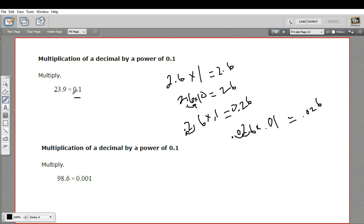So let's see how this works in a couple of these problems. This first one says multiply 23.9 times 0.1. The 0.1, that's just one place in the decimal, means we move this decimal one place to the left. So this becomes 2.39.